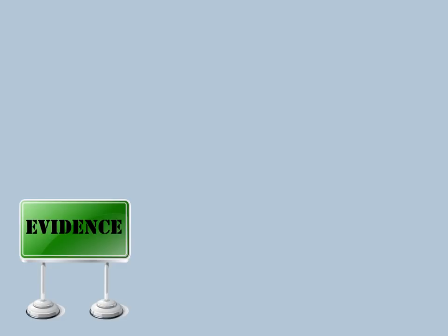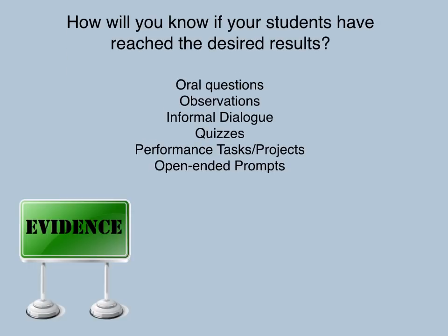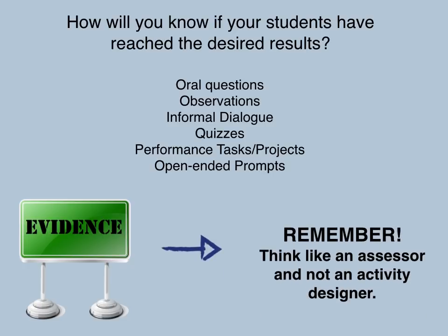Now we are on the second step in the backward design approach, which is determining acceptable evidence. How will you know if your students have reached the desired results? In backward design, thinking like an assessor should come before designing the actual lesson or unit. Evidence of understanding can be collected in many ways, and collection of evidence should take place over time, instead of a single moment in time, which is often a test that is given at the end of instruction. Remember, think like an assessor and not an activity designer.